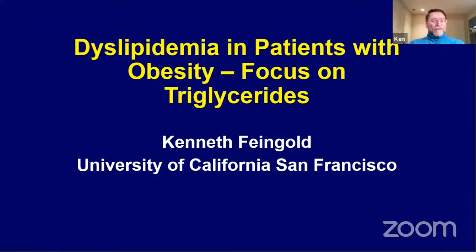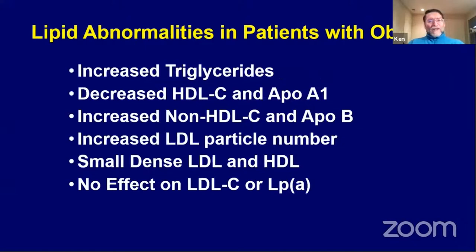What I'm going to be talking about this evening is dyslipidemia in patients with obesity, focusing on triglycerides since that's the major problem. This slide lists the lipid abnormalities that typically occur: increased triglycerides, decreased HDL cholesterol and ApoA1 levels, an increase in non-HDL cholesterol and ApoB, and increased LDL particle number. While LDL cholesterol levels aren't increased, the number of particles are increased because LDL particles tend to be small and dense. The HDL is also small and dense.